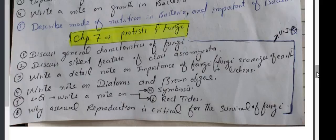Write a detailed note on importance of fungi. Fungi as scavengers of earth. Next question is: Write note on diatoms and brown algae. Write a note on symbiosis and red tides. Why is asexual reproduction critical for the survival of fungi?